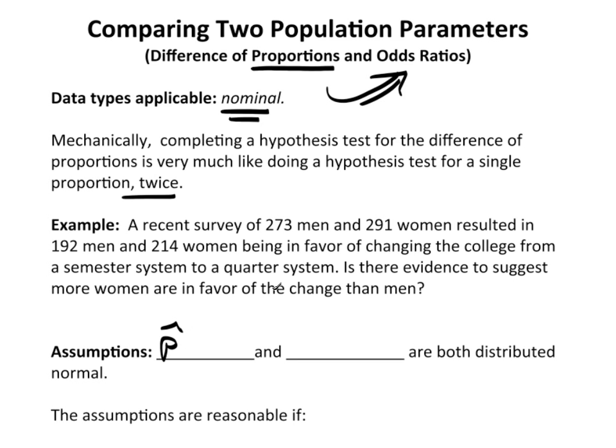So the assumptions are going to be that p-hat men is distributed normal, and p-hat women are distributed normal. They both need to be distributed normal.